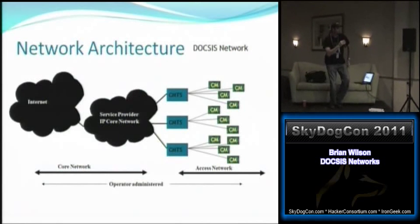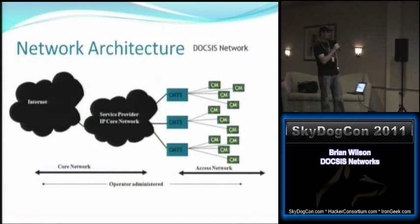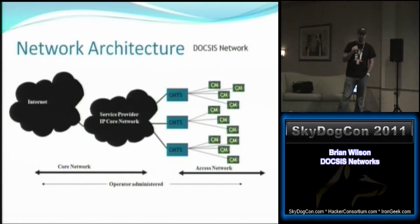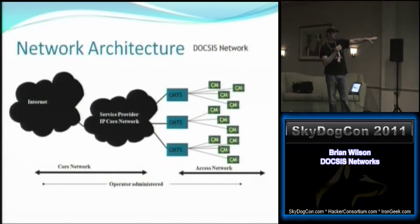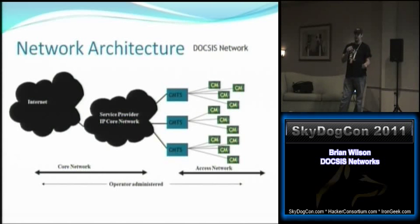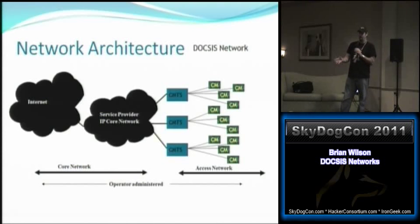Here's the network architecture of a DOCSIS network. The big black cloud is the internet, connected to the service provider IP core network — your ISP's network. Most major ISPs are co-located in many locations with private fiber backbone networks. Your IP core service provider network can in some ways be almost as big as the internet. ISPs normally have public peering and private peering; private peering is better in some ways.